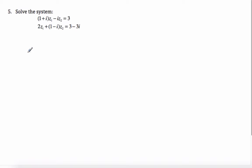Okay, so now looking at this system of equations or simultaneous equations with complex numbers. In order to solve this, I'm going to use elimination. I'm going to multiply this top one by negative 2 and this bottom one by 1 plus i.